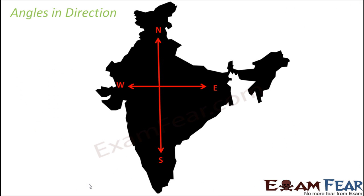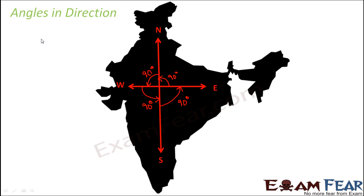Angles play a very critical role in direction. When we talk about direction, we majorly talk about four directions: east, west, north, and south. Every time you rotate by 90 degrees you get a new direction. For example, if you are facing towards east and rotate in the anti-clockwise direction by 90 degrees — this is a right angle or 90 degree — you face towards north. A further rotation of 90 degree brings you to face west, and a further 90 degree brings you back facing towards east.